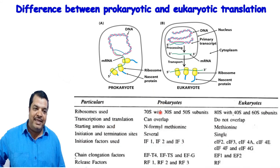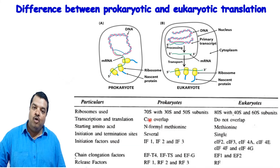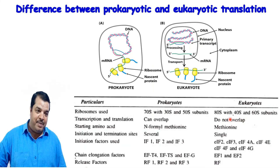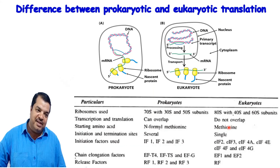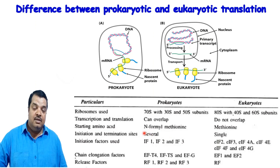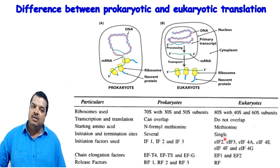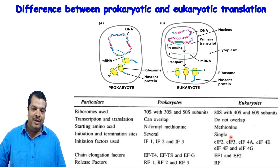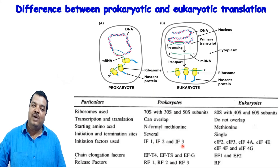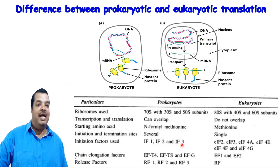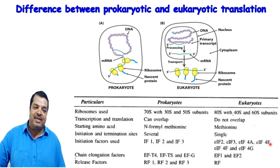Other differences: Ribosome type — 70S in prokaryotes, 80S in eukaryotes. Transcription and translation can overlap in prokaryotes, but do not overlap in eukaryotes because they occur in separate compartments. Starting amino acid — formyl methionine in prokaryotes, methionine (non-formylated) in eukaryotes. Initiation and termination sites — several in prokaryotes (AUG, GUG), but only AUG in eukaryotes. Initiation factors in prokaryotes: IF1, IF2, IF3.